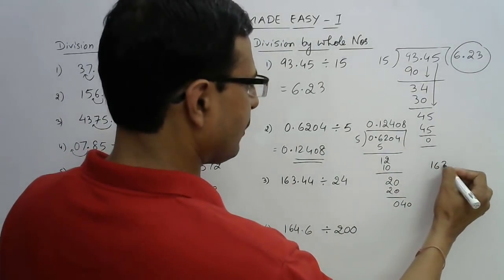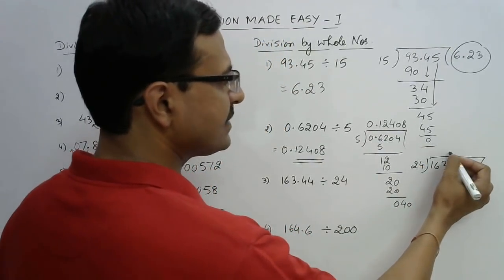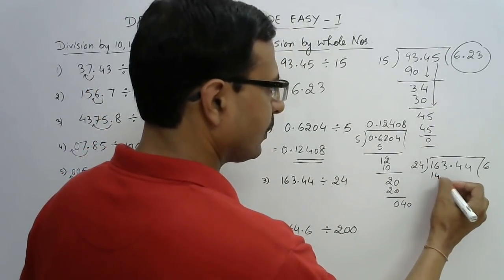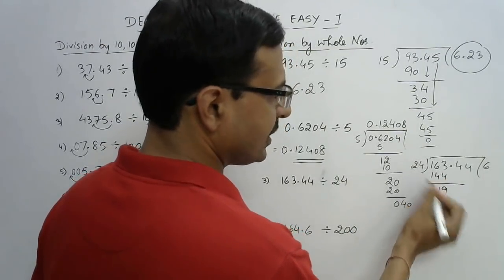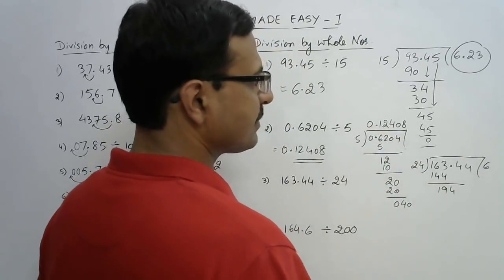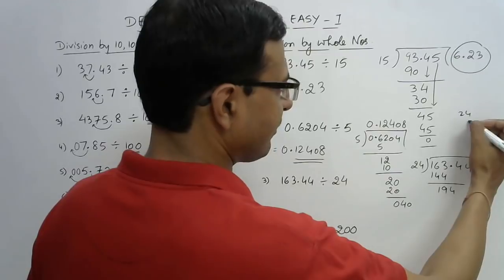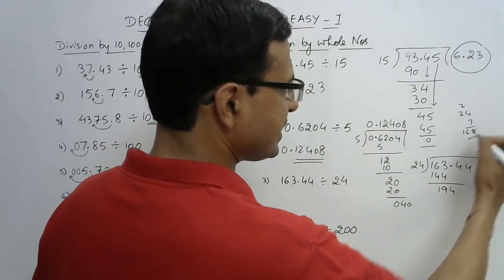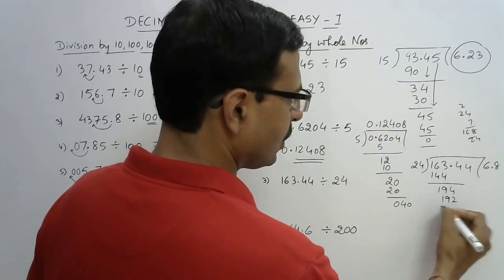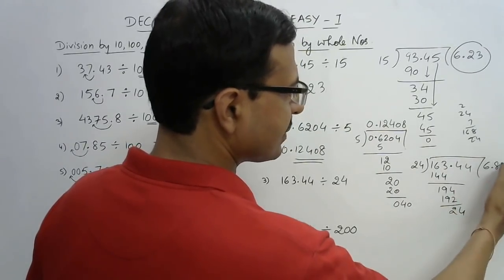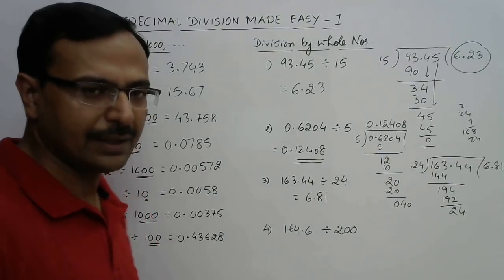Likewise, dividing 163.44 by 24: start the process — 24 goes 6 times into 163, giving 144, remainder 19. Bring down 4 — but this 4 comes after the decimal, so we place the decimal in the quotient here. 24 goes into 194 about 8 times: 24 × 8 = 192, remainder 2. Bring down 4 to get 24, and 24 × 1 = 24, giving the final answer 6.81.